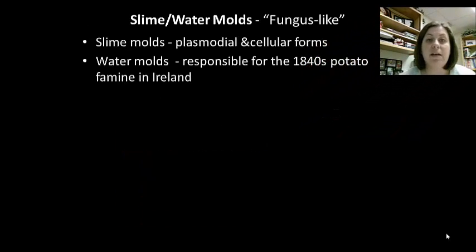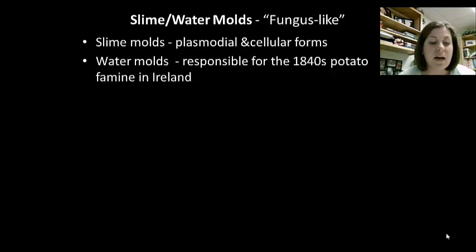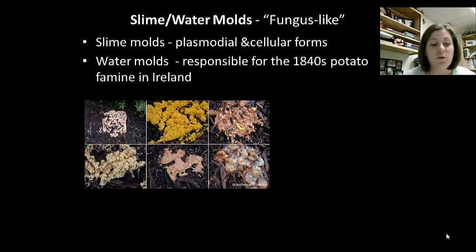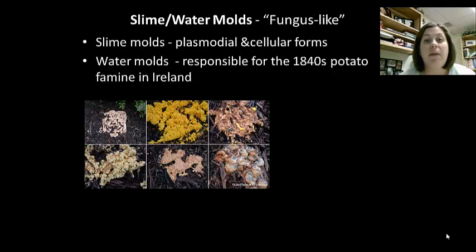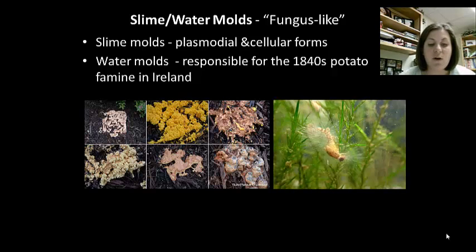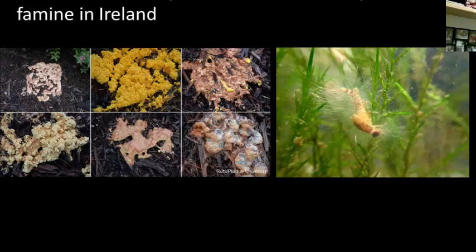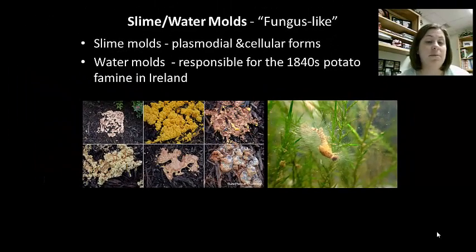The next major group of protists is the slime and water molds. These are the fungus-like protists and they produce spores in a structure called sporangia during unfavorable environmental conditions. Many are saprotrophs — they decompose dead material, which is why they are fungus-like. A few can be parasitic if ingested. Slime molds can be plasmodial, creeping along the ground by way of a slimy sheath, or cellular, meaning microscopic. Water molds live in water and form a furry mass on objects they're decomposing. These are responsible for the potato famine in Ireland in the 1840s.